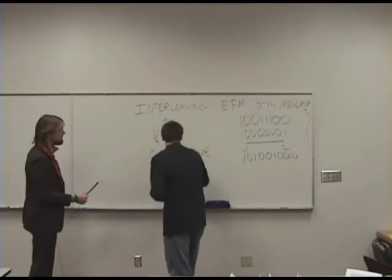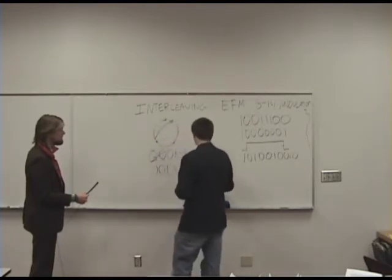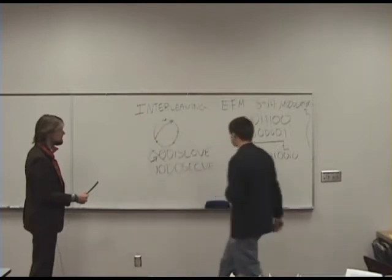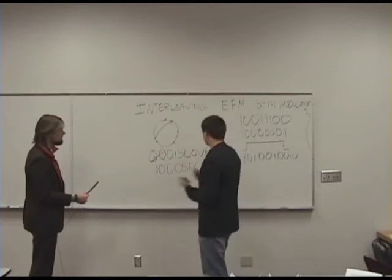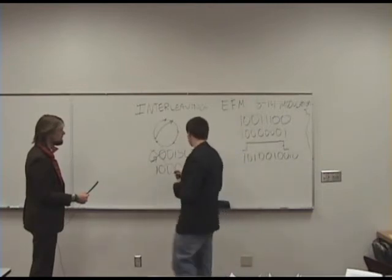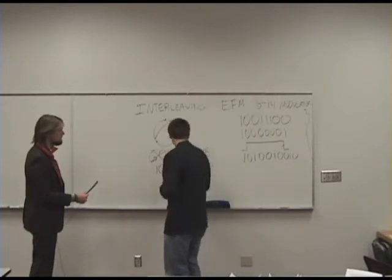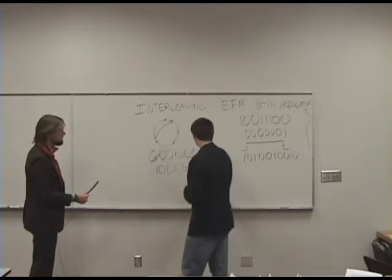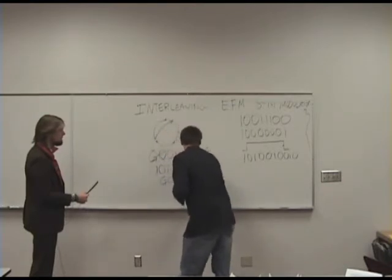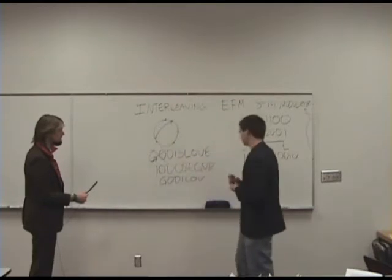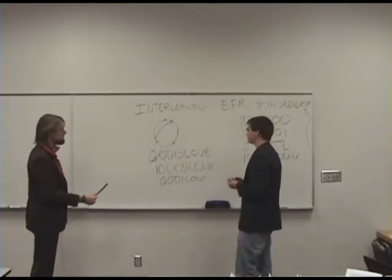So you might rearrange letters like V and E. And now if you lose some bits — say you lose this E and S — then after you descramble it, you can come back the other way and you still have 'God.' And then it's easier to see what you had initially. And so that's another technique.